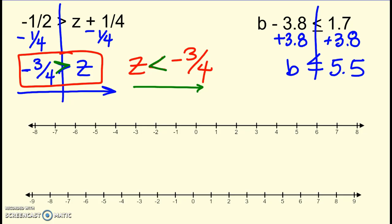So let's find negative 3 fourths. It would be, here's 0, negative 1, negative 3 fourths would be in the middle there. And Z is smaller than that. So it doesn't include the negative 3 fourths, open circle, but anything smaller, bigger negatives to the left.